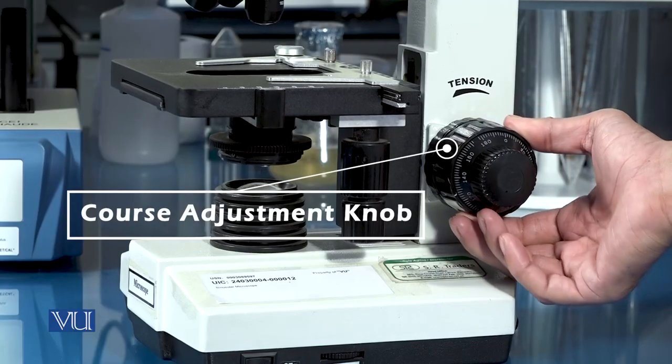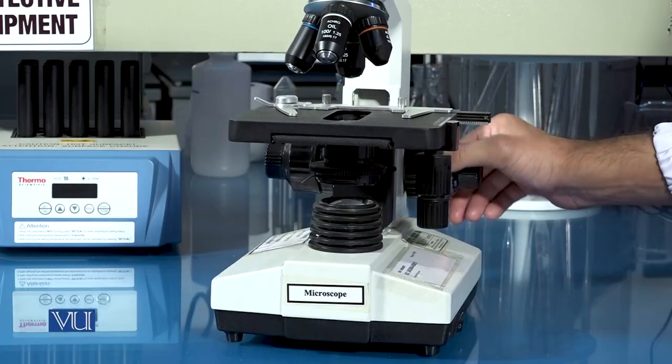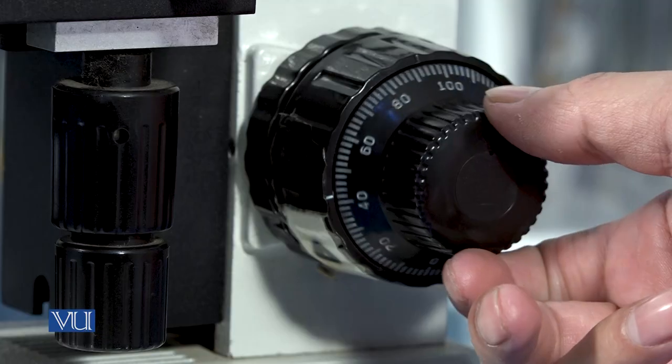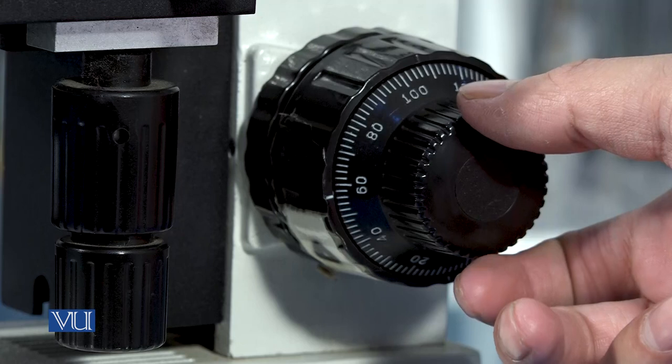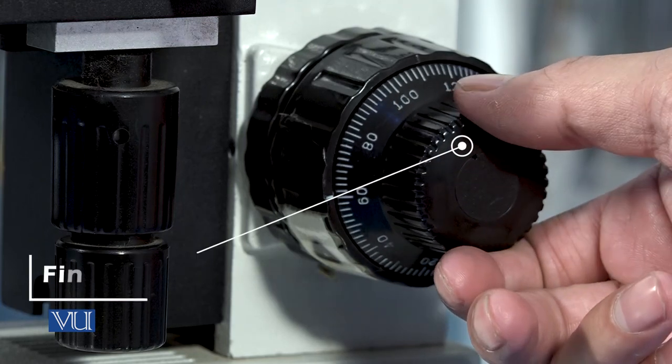The microscope stage can be moved up and down using coarse adjustment. Once the slide is focused using coarse adjustment, fine focus is used to further improve the resolution of the specimen.